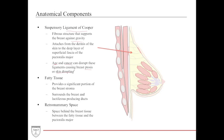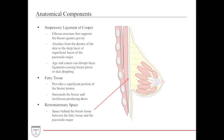The breast is full of fatty tissue, which provides a significant amount of the breast stroma — the structural component of the breast — and surrounds the lactiferous producing ducts. There is also a space right behind the breast glands and fatty tissue called the retromammary space, which sits between the fatty tissue and the pectoralis major. This is where you can dissect this plane out and is often used for breast implantation.